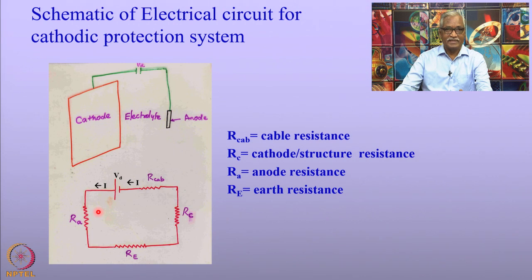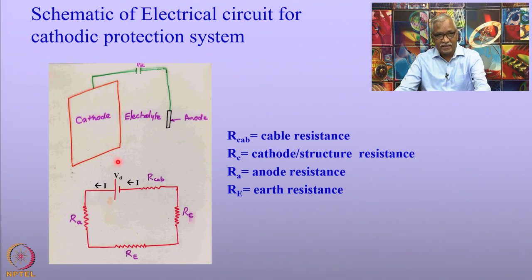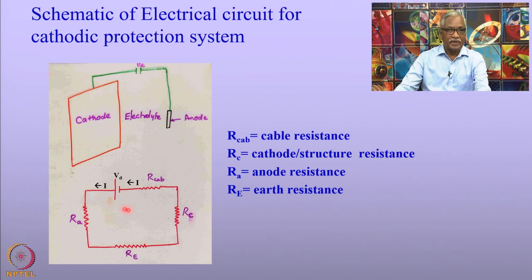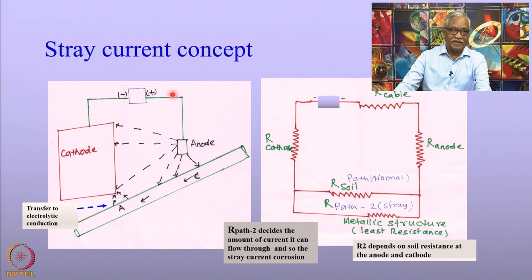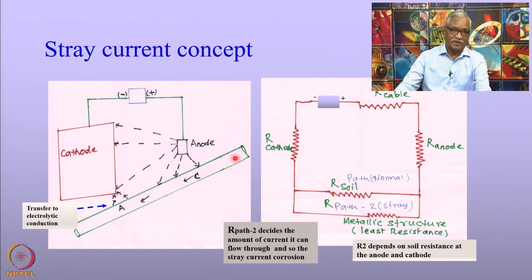What happens if there is a foreign structure close to this cathodically protected structure? We shall now see what happens if there is a foreign structure lying very close to the cathodically protected structure. In this slide, the schematic of the cathodically protected structure and the foreign line passing through this structure is given on the left side, and an electrical equivalent circuit is provided on the right side.